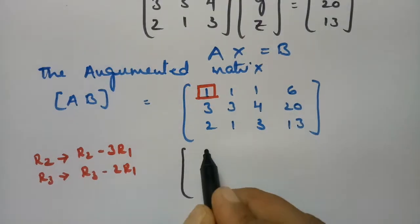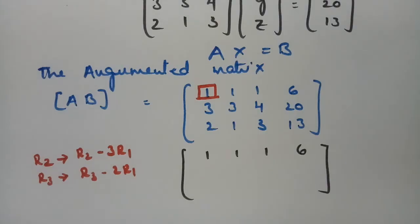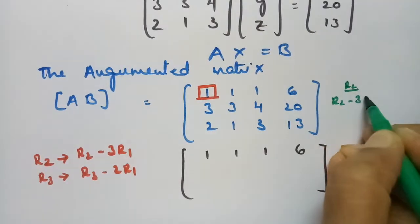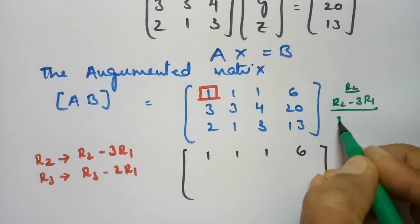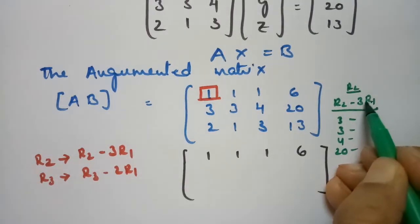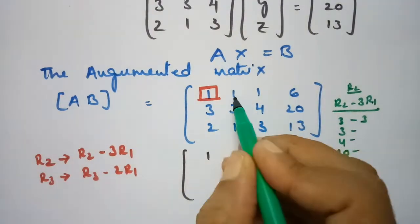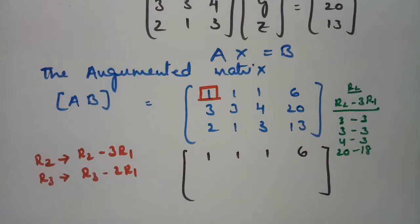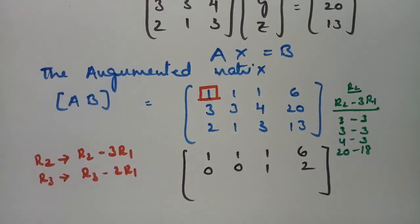Row 1 remains as it is: 1, 1, 1, 6. For row 2, the operation is R2 - 3R1. Row 2 is 3, 3, 4, 20 minus 3 times row 1 which is 3, 3, 3, 18. This gives 3-3=0, 3-3=0, 4-3=1, and 20-18=2.